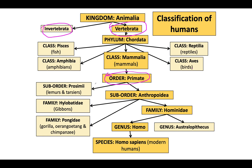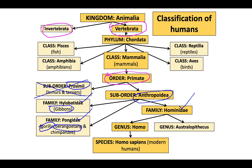Under the order of Primates, we have the suborders Prosimi and Anthropodia. Under the suborder Prosimi, we have the lemurs and the tarsiers — but that's not where we belong. We belong in the suborder Anthropodia. Under this suborder we have the family Hylobatae, the family Pongidae, and the family Hominidae. Under Hylobatae we have the gibbons. Under Pongidae we have the gorilla, the orangutan, and the chimpanzees. And under the Hominidae family — that is where we belong.